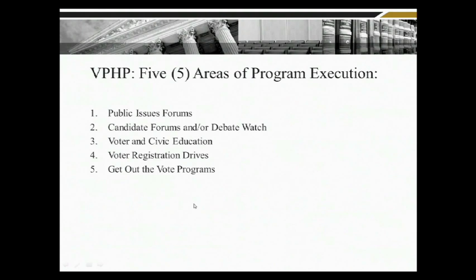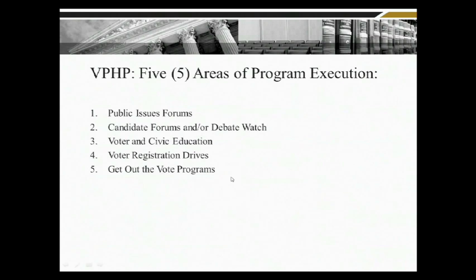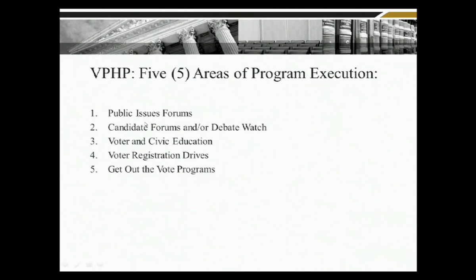These are the five program areas. Clearly the expectation is that if a chapter can support all five program execution areas that would be great — we'd love to see each chapter do that. But as a minimum, each chapter should be expected to do at least one of these five activities each year. If you can do all five, that's great, but at a minimum each chapter should be able to do at least one of these events.